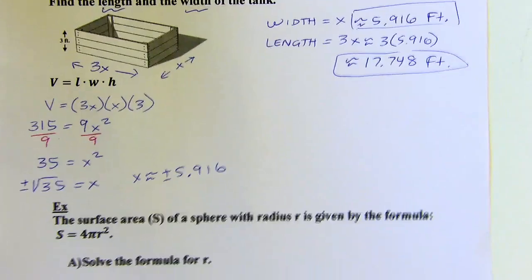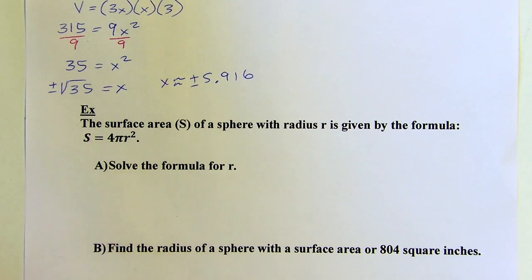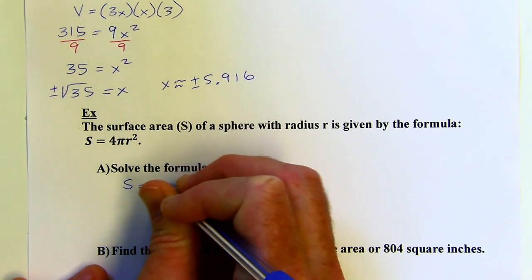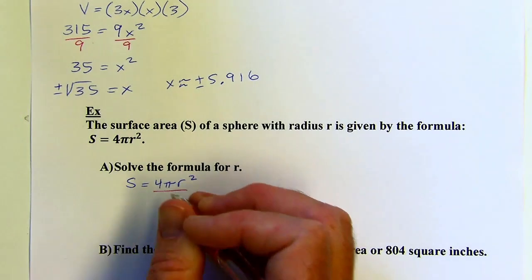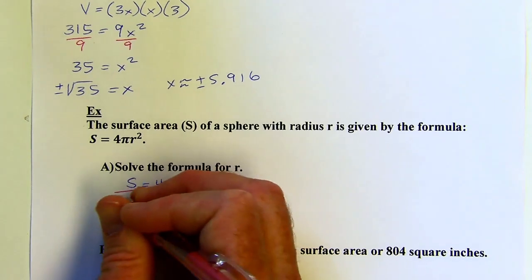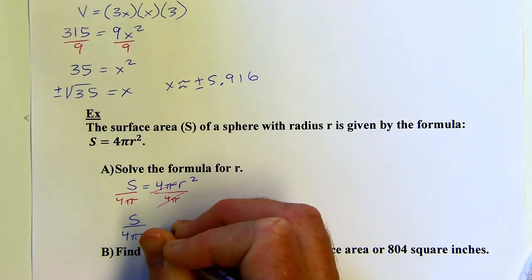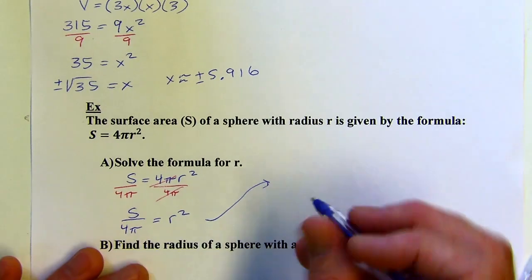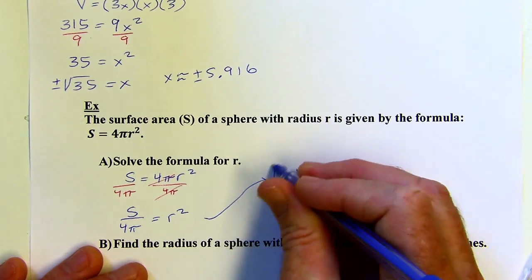Let's try one more: the surface area of a sphere, given by the formula S equals 4 pi R squared. This says solve the formula for R. Pi is just a number — about 3.14. To get R squared isolated, I divide both sides by 4 pi, and those cancel. Now I've got S over 4 pi equals R squared. Next, I take the square root of both sides — with the plus or minus symbol — giving me R equals plus or minus square root of S over 4 pi.